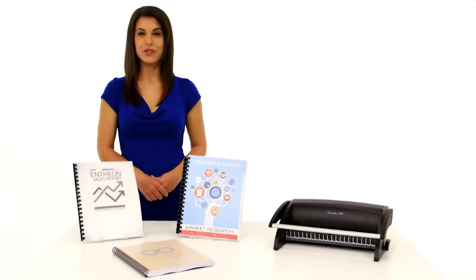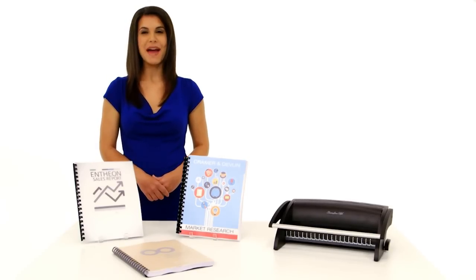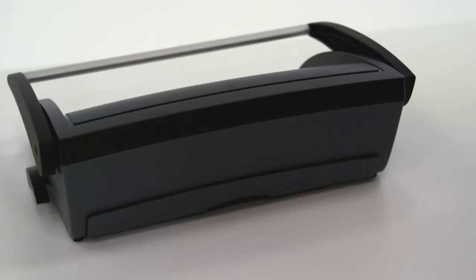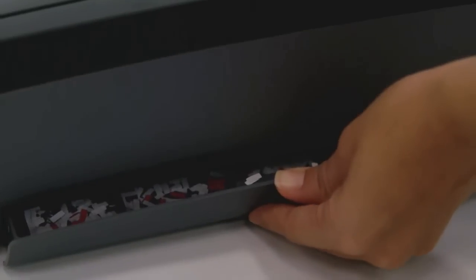The C12 can bind up to 225 sheets or a maximum comb size of 7-8ths of an inch. There is even an easy-to-access chip tray at the back of the unit that collects the paper waste for quick and mess-free disposal.